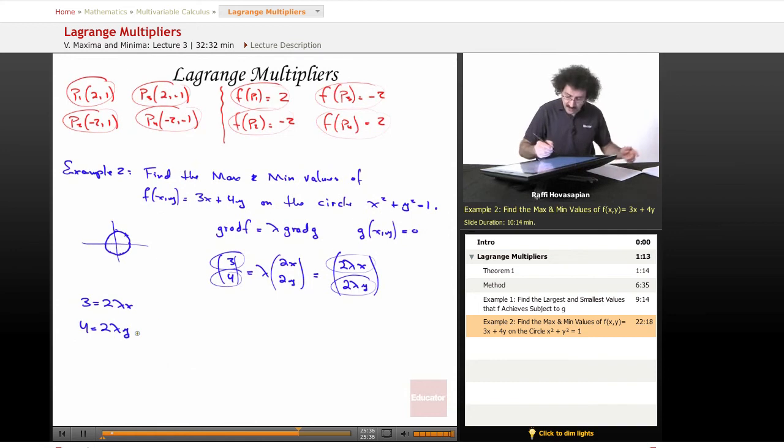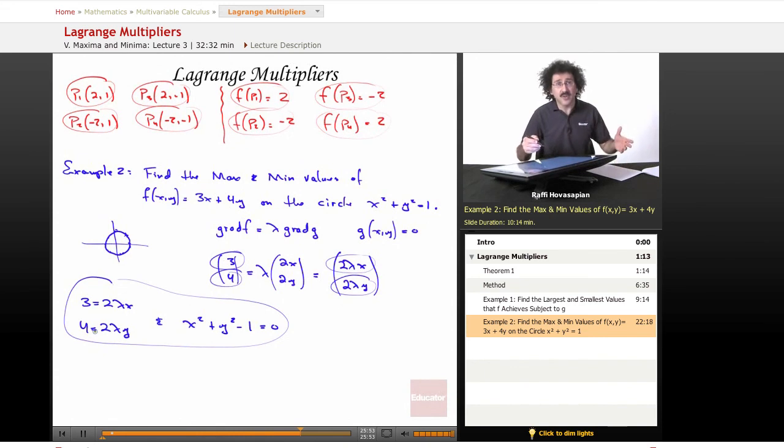We have the equation 3 equals 2 times lambda x, and 4 equals 2 times lambda y. And of course, we have g of x, y equals 0, so we're going to get x squared plus y squared minus 1 equals 0. This is our set of three equations in three unknowns - x, y, and lambda. We have three equations and three unknowns. Theoretically, this is solvable. Now we just have to find x, y, and lambda. Ultimately x and y, but lambda along the way.